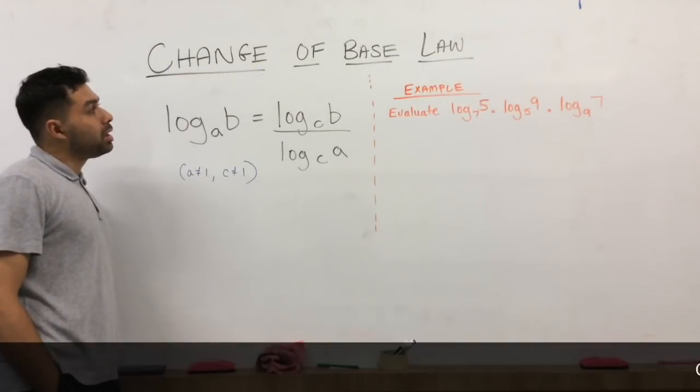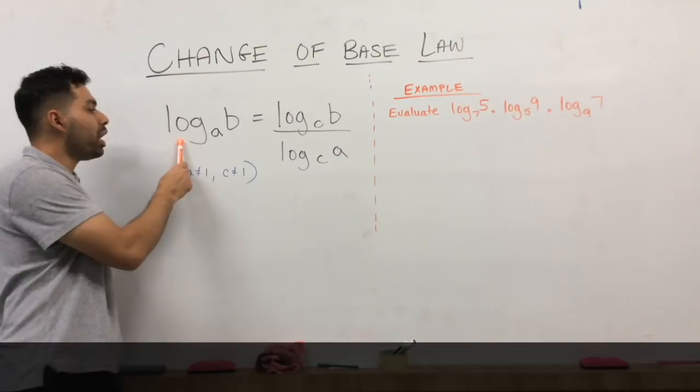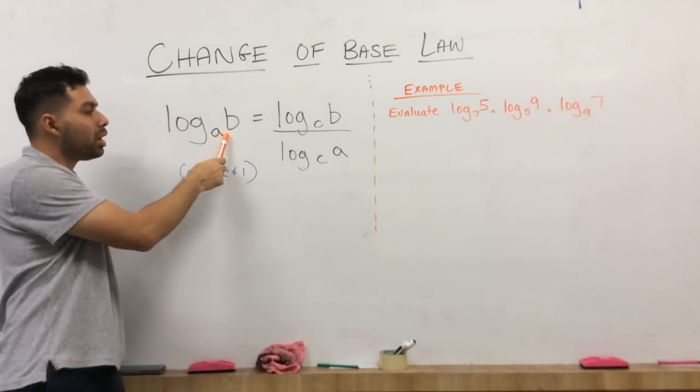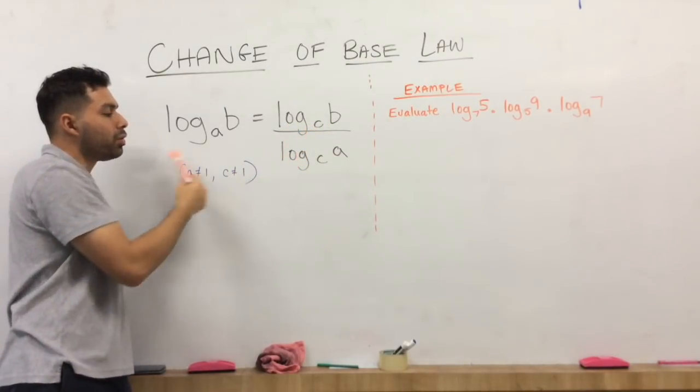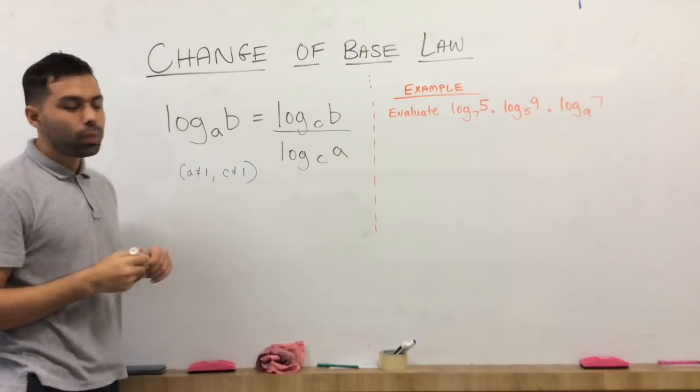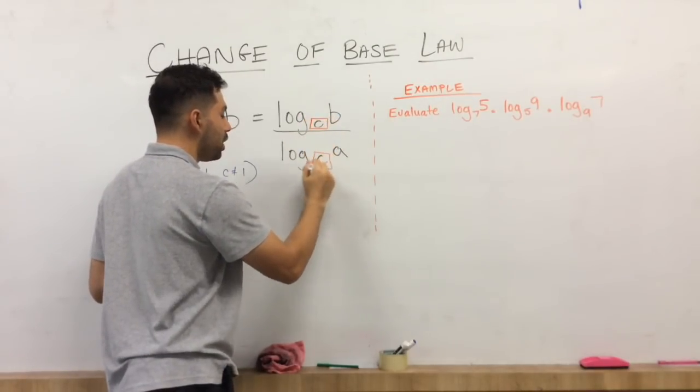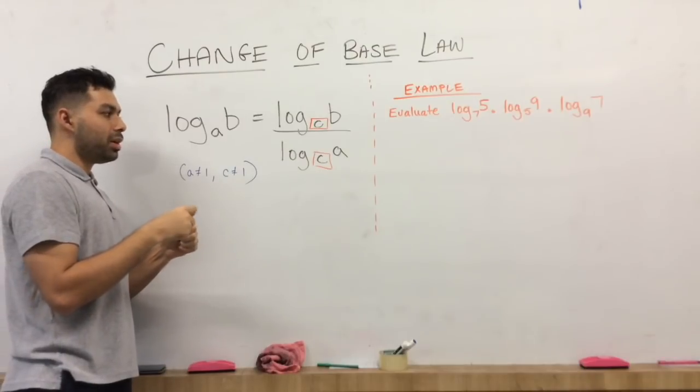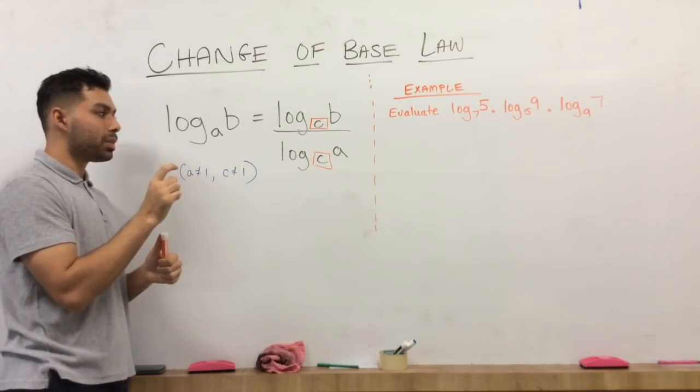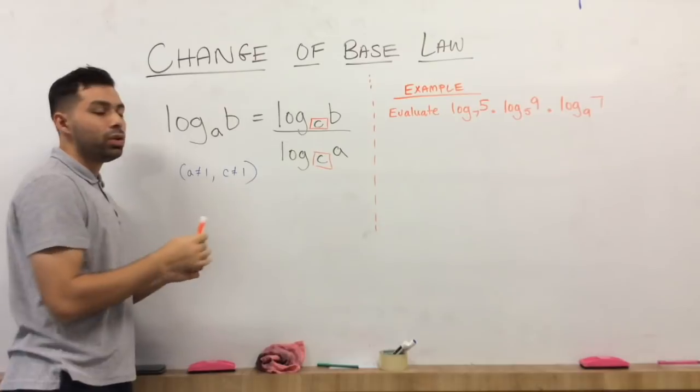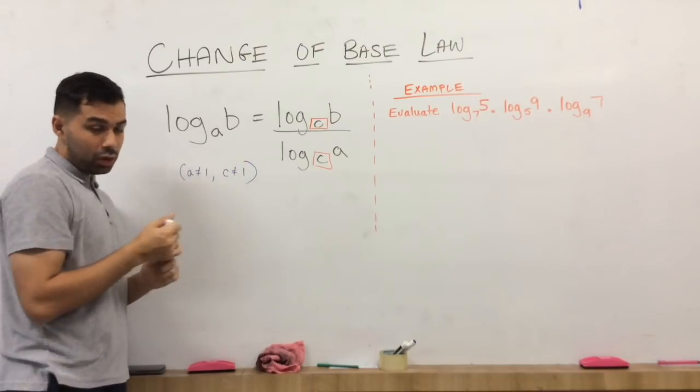So the first law we're going to discuss is called the change of base law. Now what the change of base law tells you is if we have log of base A of B, that is equivalent to log of base C of B over log of base C of A. Now you're probably wondering what that C is since it wasn't involved here. It's a number that you can kind of make up on your own. Usually, you stick to 10 because of your calculator. Your calculator always has a base 10 whenever you input log for most calculators. But this formula is something you do want to remember.